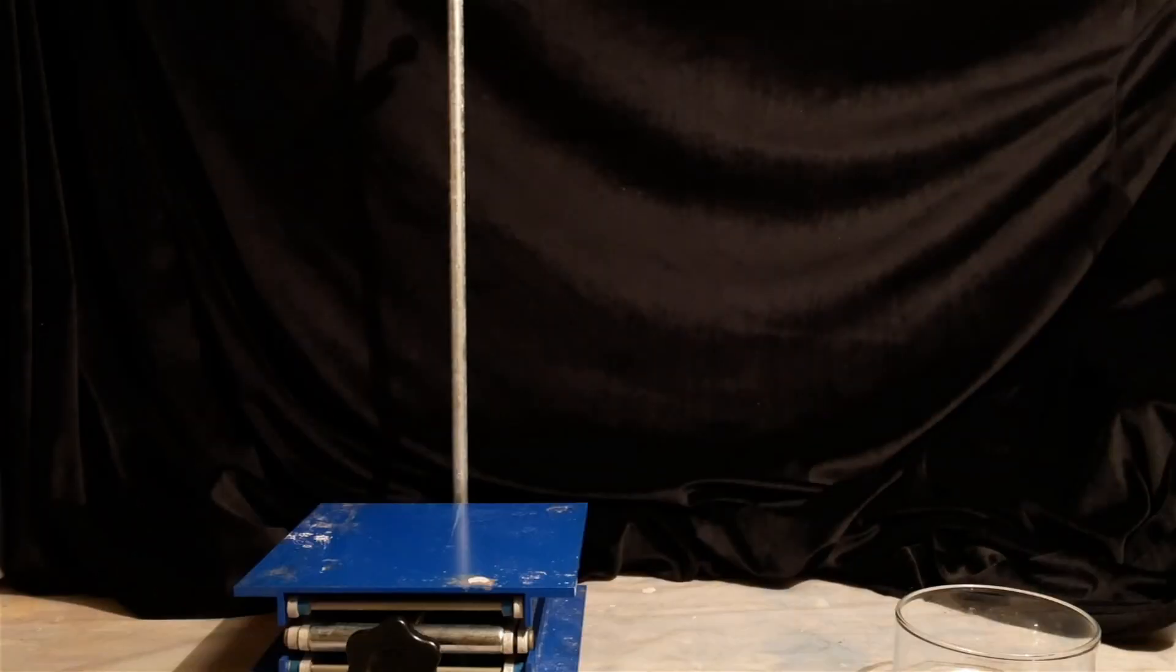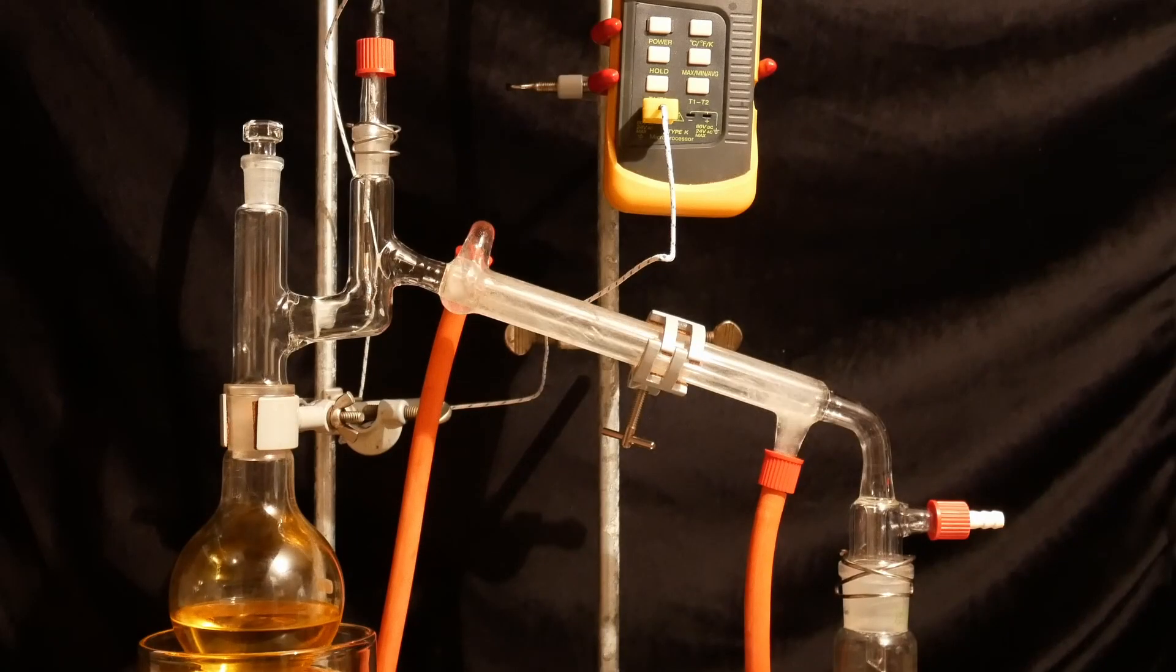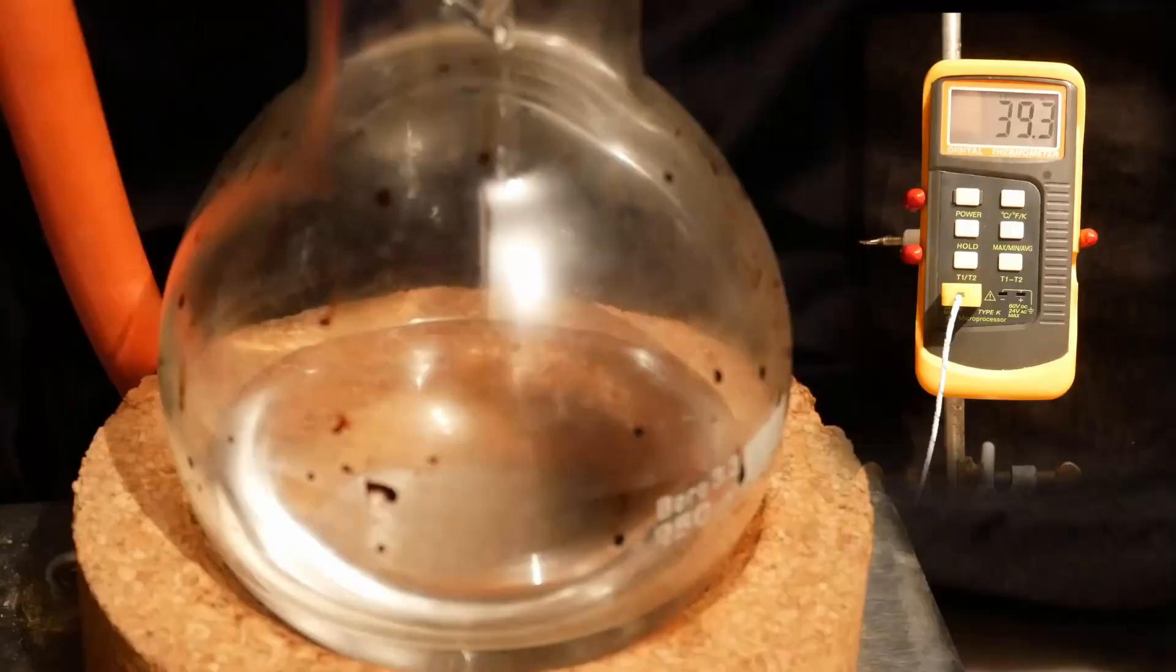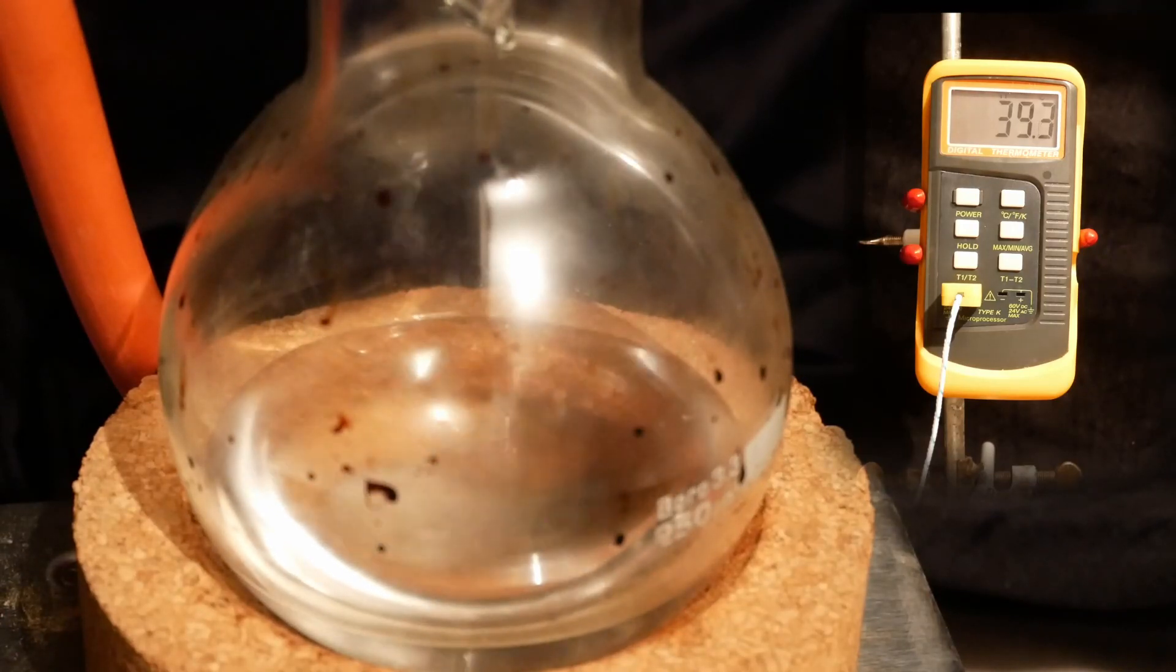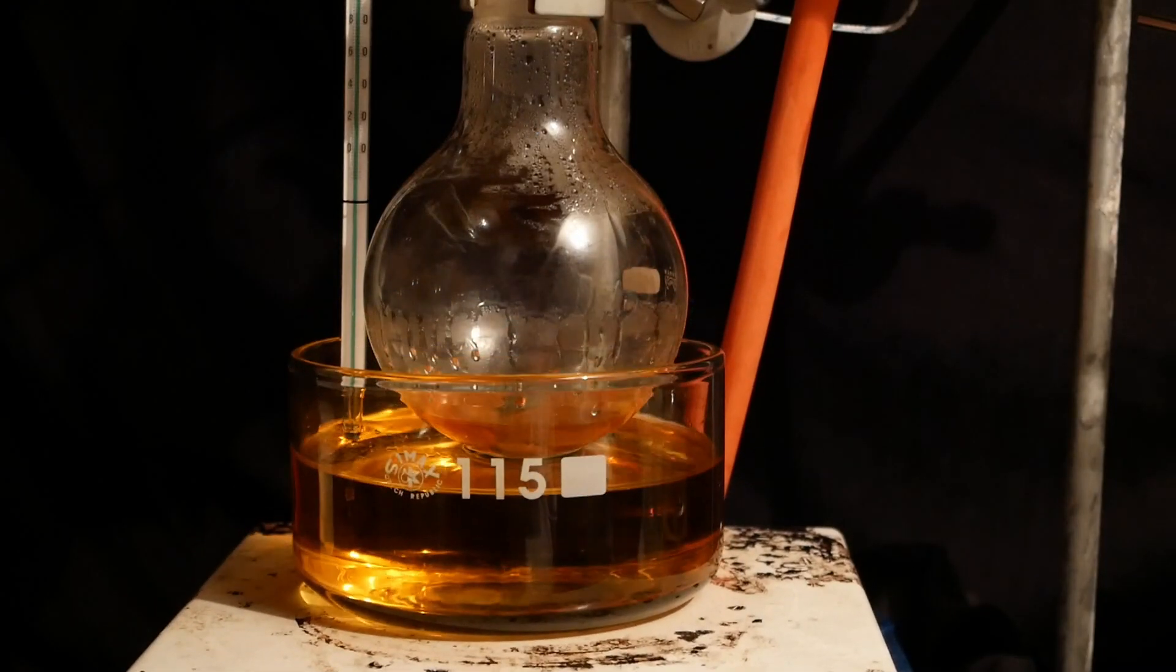A distillation setup is then assembled. The dichloromethane comes over first with a boiling point of 40°C. Once all of the DCM has been removed, we are left with a red, viscous oil in the flask.